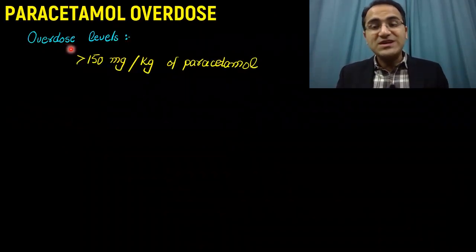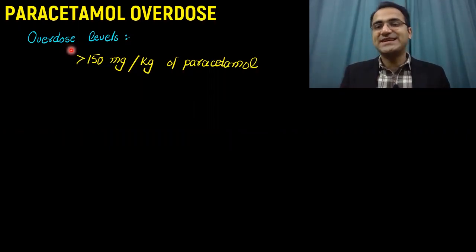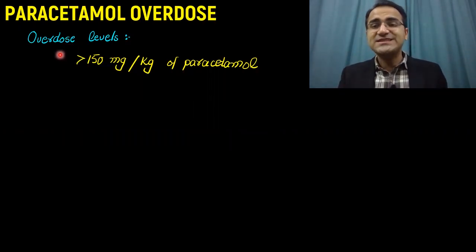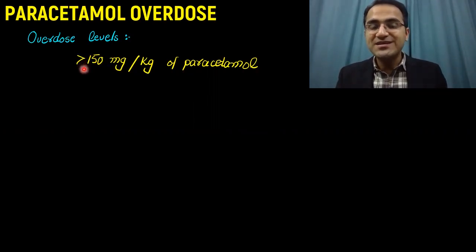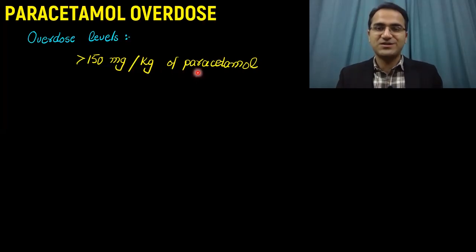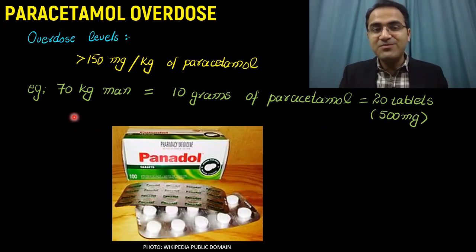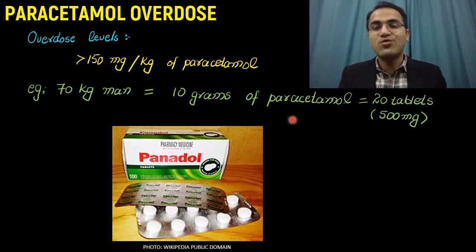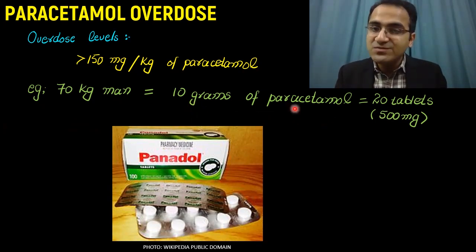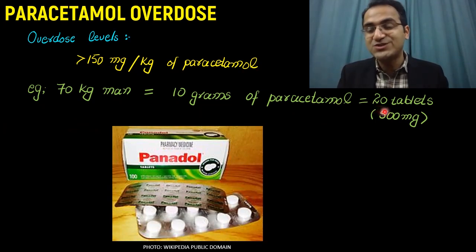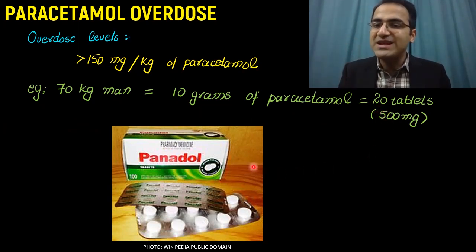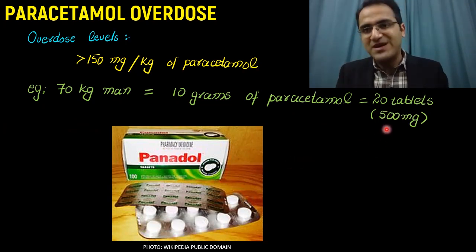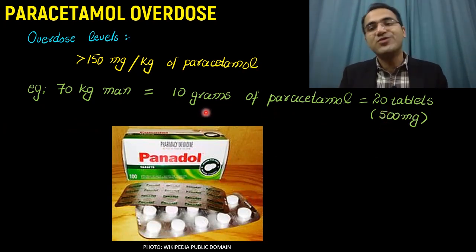Paracetamol is a commonly used antipyretic analgesic agent, easily available in the markets. Its overdose levels are reached when a person consumes greater than 150 mg per kg of paracetamol. For example, a person weighing 70 kg would need to consume 10 grams of paracetamol to reach toxic levels — that equals 20 tablets of the commonly available 500 mg Panadol formulation.